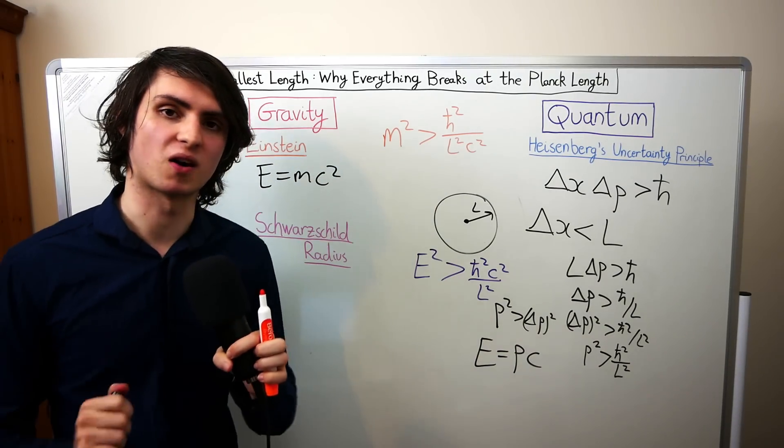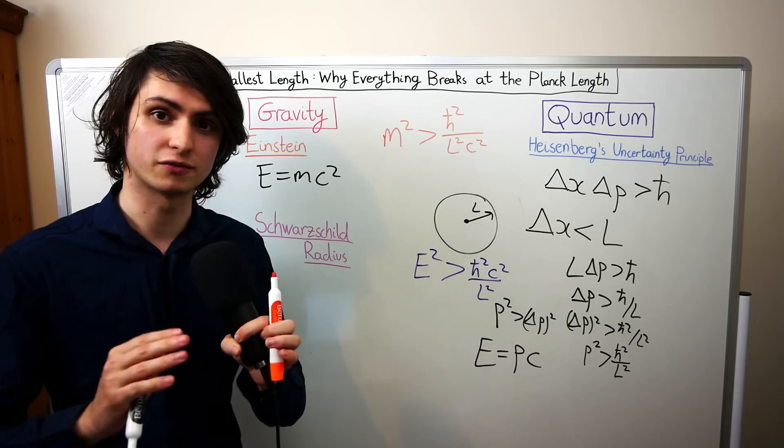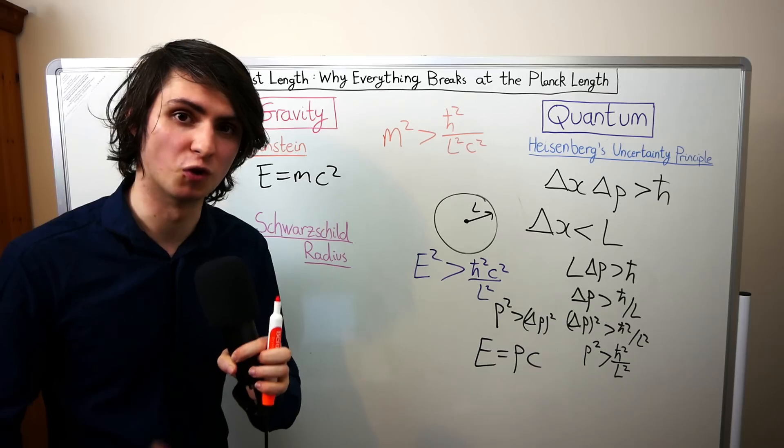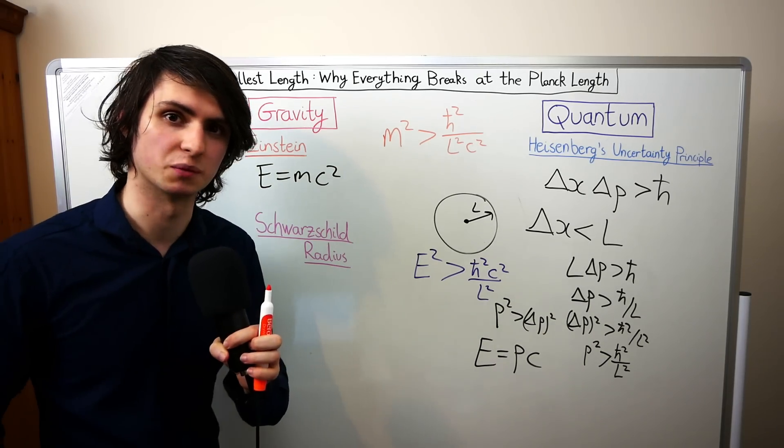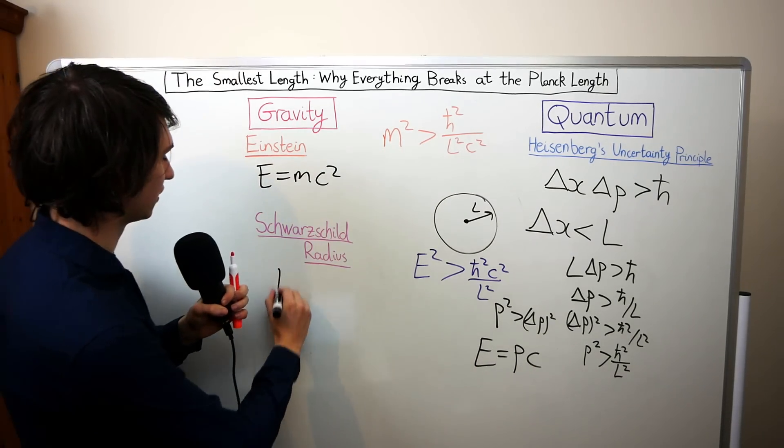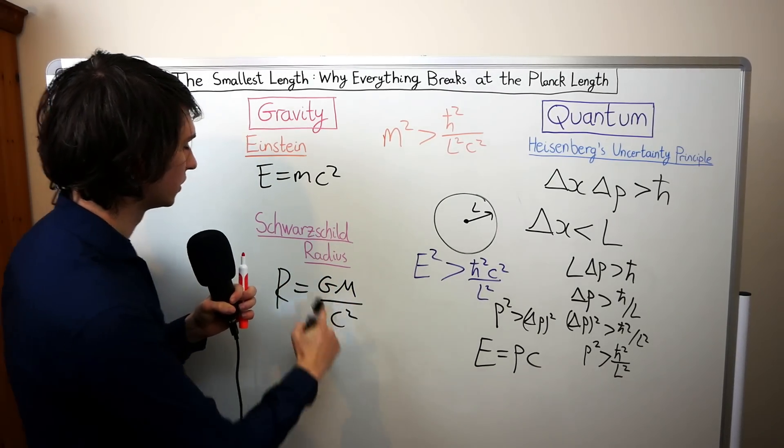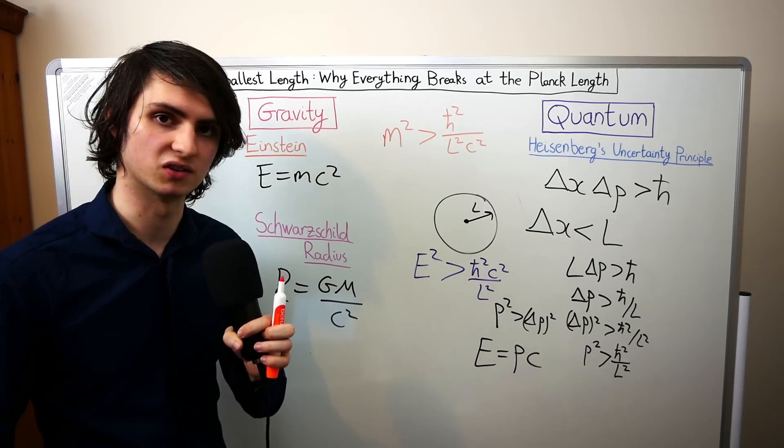Now I'm sure you're all familiar with black holes. These are the strongest gravitating objects in the universe. If you have too much mass in too small a region then a black hole will form. Now every object has a special length associated with it called its Schwarzschild radius. The Schwarzschild radius is written like this: R equals gm over c squared.